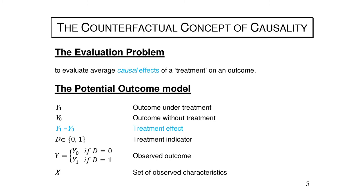Ex ante, both potential outcomes are defined, but the moment the individual decides on treatment — D equals 1 if treated, D equals 0 otherwise — one of these outcomes is revealed and the other becomes an unobserved counterfactual. The observed outcome will be Y0 if you are non-treated and Y1 if you are treated. X is a set of observed characteristics — like gender or age — that are not affected by the treatment.